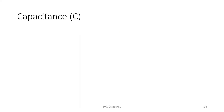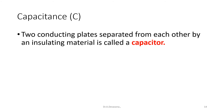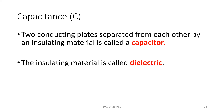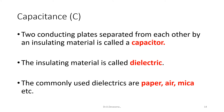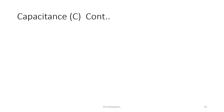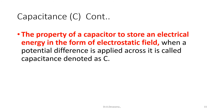Let us start discussing about the third parameter, capacitance capital C. Two conducting plates separated from each other by an insulating material is called a capacitor. The insulating material is called dielectric. The commonly used dielectrics are paper, air, mica, etc. The property of a capacitor to store electrical energy in the form of electrostatic field when a potential difference is applied across it is called capacitance. It is denoted as capital C, and it is measured with the help of the unit farads, denoted by capital F. Let us see the symbol of the capacitance. The representation of the capacitor in the form of three types — fixed capacitor, polarized capacitor, and variable capacitor symbol — are shown in this diagram.